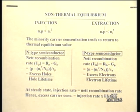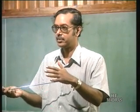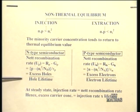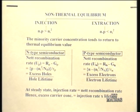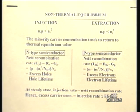In steady state, the net recombination rate must equal the injection rate for carrier concentration to remain constant. Therefore, the injection rate equals excess holes divided by hole lifetime, and hence the excess carrier concentration equals injection rate multiplied by lifetime. If you know the excess carrier concentration and the lifetime you can find the injection rate. This relationship is also how we calculate the current flowing into a PN junction.